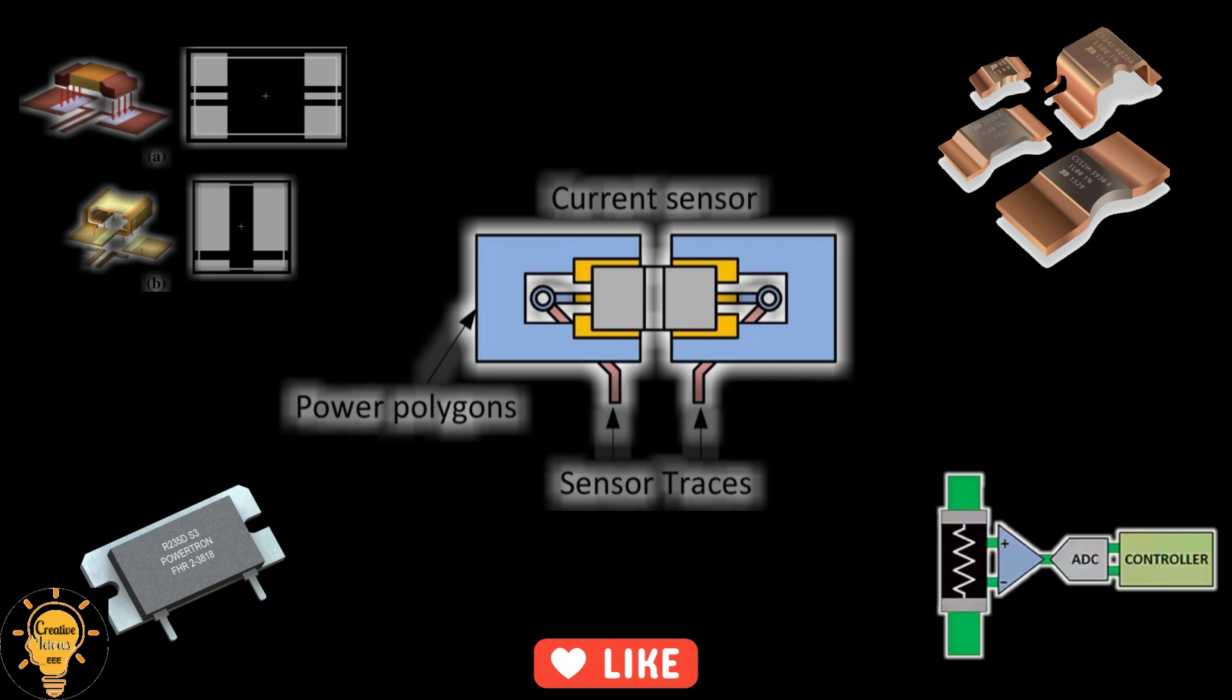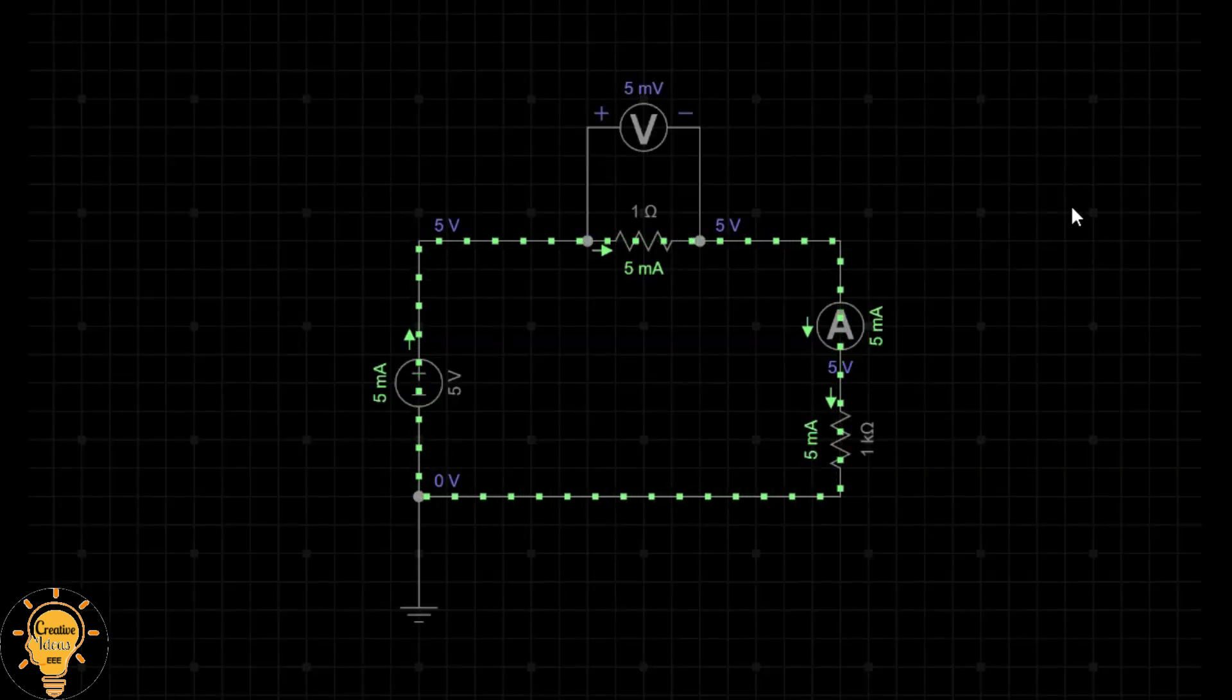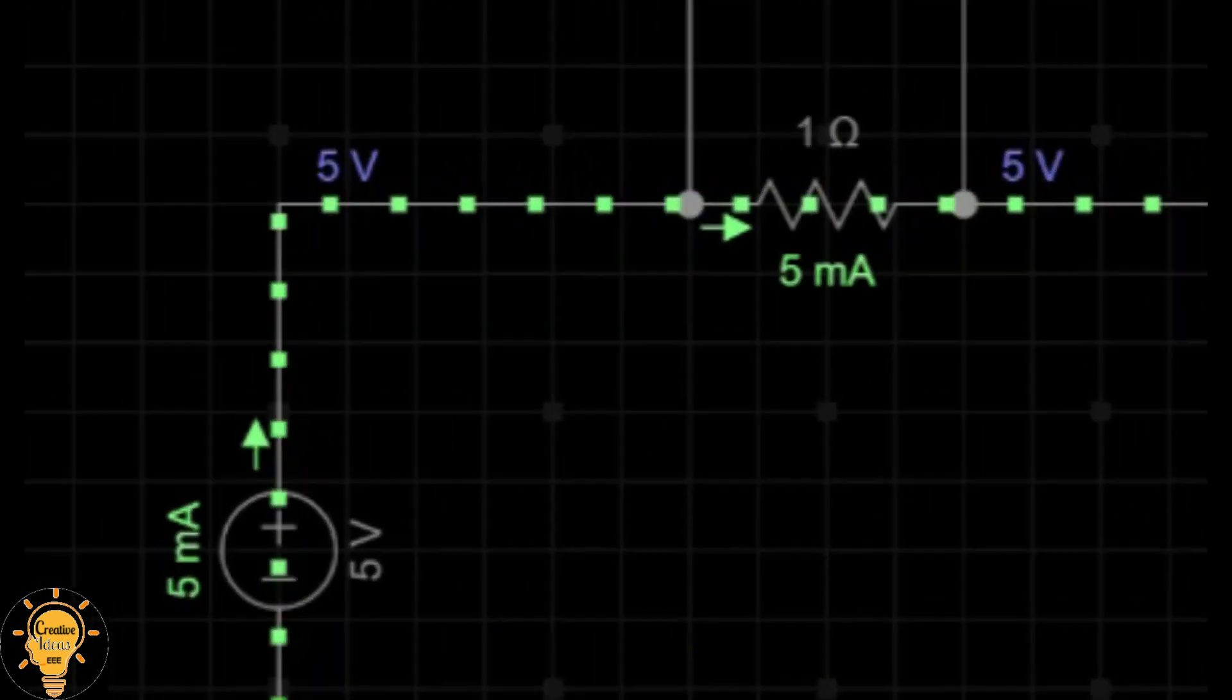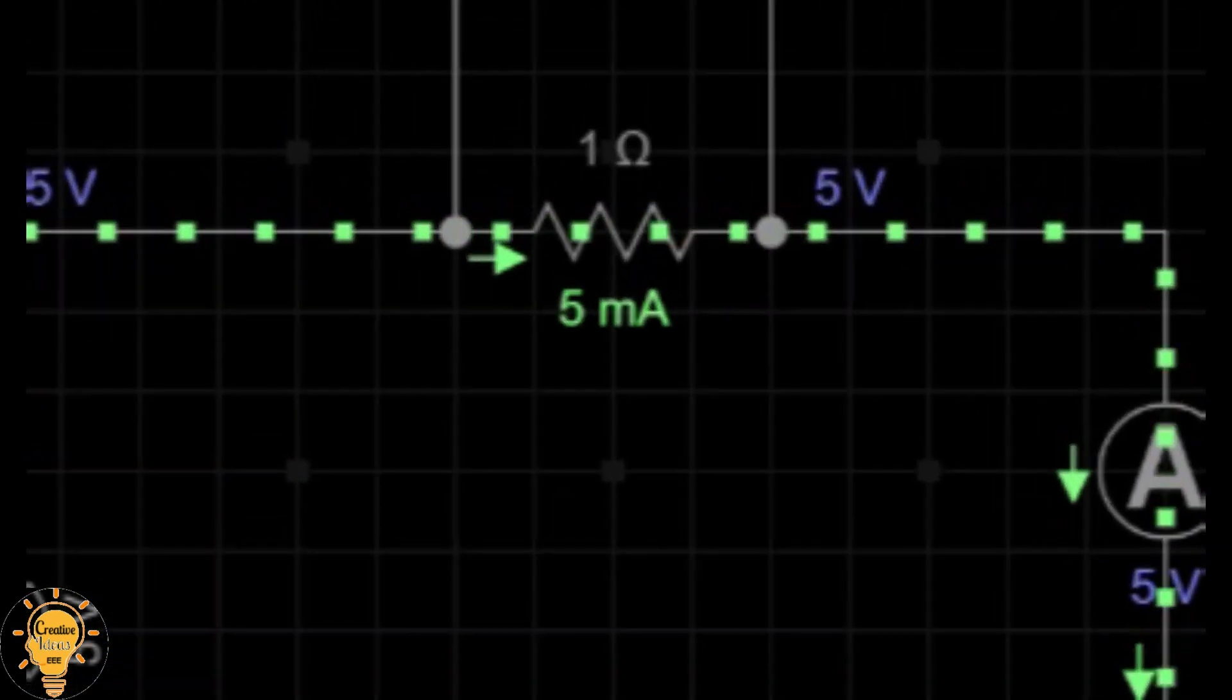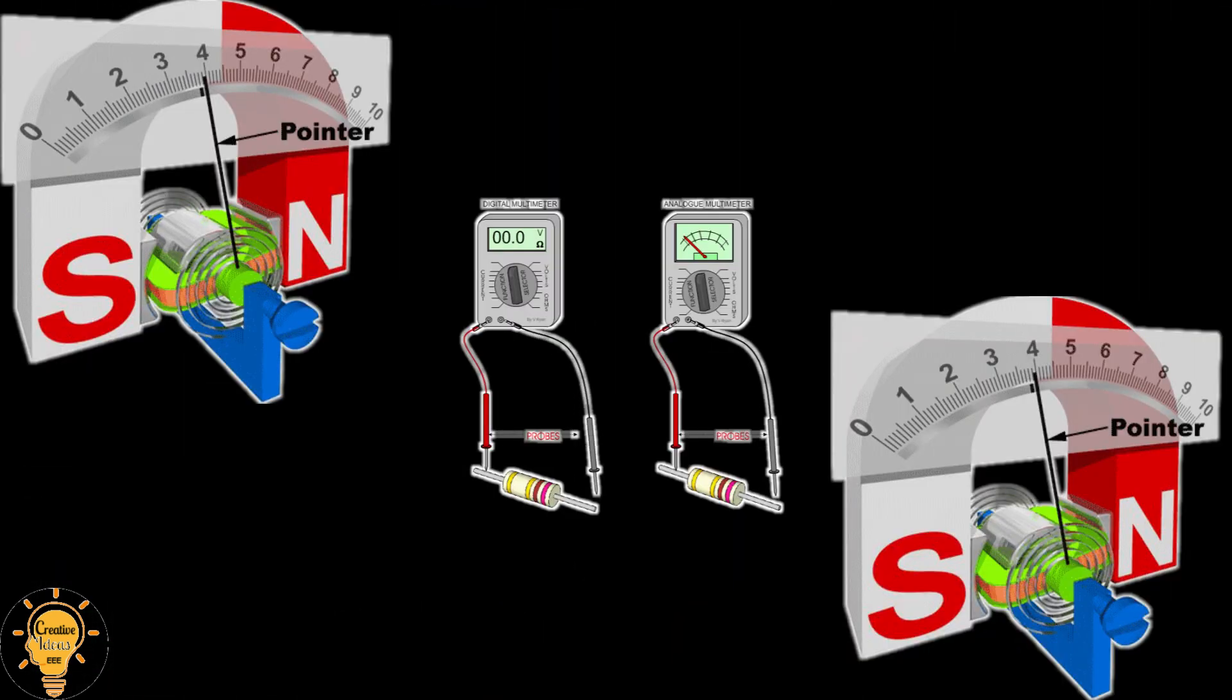A shunt resistor is a device that creates a low resistance path for electrical current in a circuit. It is used to measure electric current, alternating or direct, by measuring the voltage drop across the resistor.